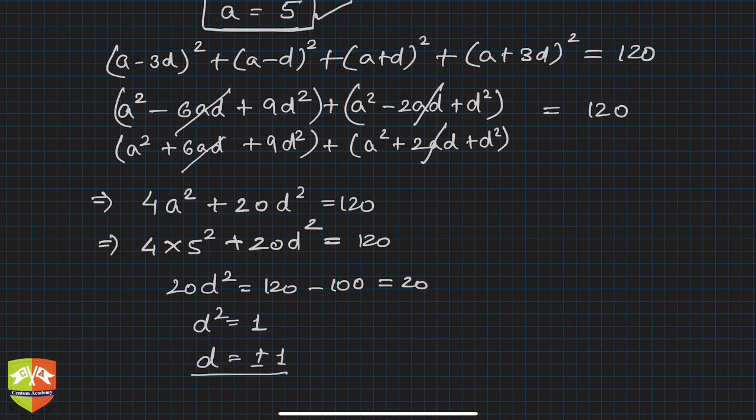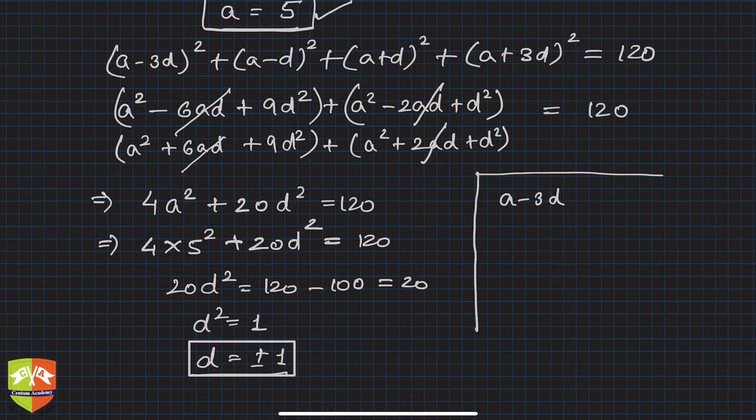So now we have got both a, we got this one is a, and we got d. So now we can find out the AP or the four terms. The four terms are: first term was a minus 3d, that means it could be 5 plus 3 or 5 minus 3, so hence either it is 8 or 2.